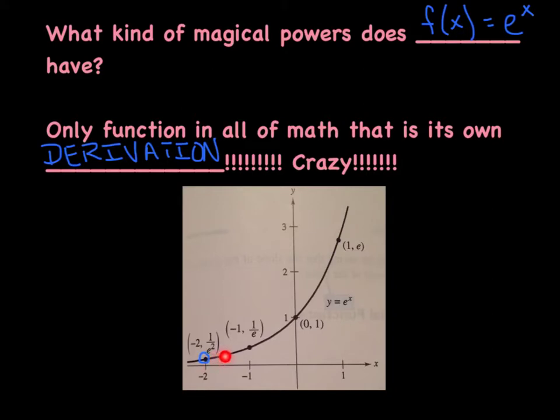And as you move along the curve, the y values are increasing, and the slopes are increasing, and increasing, and increasing. In fact, what we're going to discover here is that the slope at any instantaneous moment is exactly the same as the y coordinate.